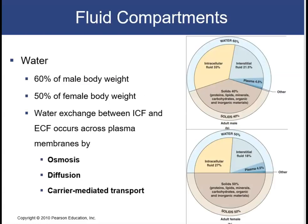We're going to start with fluid balance first, coming back to the importance of water. 60% of the male body is water, whereas about 50% of the female body is comprised of water. The difference is due to the fact that females tend to have more adipose tissue and males have more muscle tissue, which accounts for the differences in water. Water exchange between the ICF and the ECF occurs across the plasma membrane — our cell membrane — which is the main membrane separating these two major fluid compartments. This occurs via osmosis, diffusion, and carrier-mediated transport.